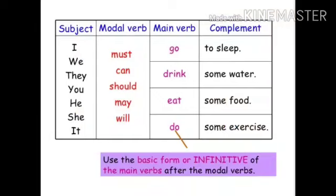One important point: modal auxiliaries do not need any other auxiliary verb with them. Also, with modal auxiliary verbs, we always use the basic form — the first form — of the main verb. In all the examples, we are using the first form of the main verb.